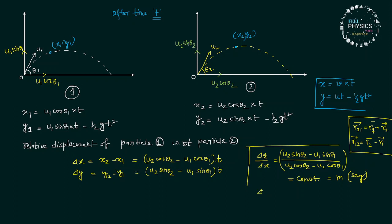So, here we can see delta y equals m delta x. This is the equation of a straight line. So, we can conclude that the motion of one projectile seen from the other one will be a straight line path.